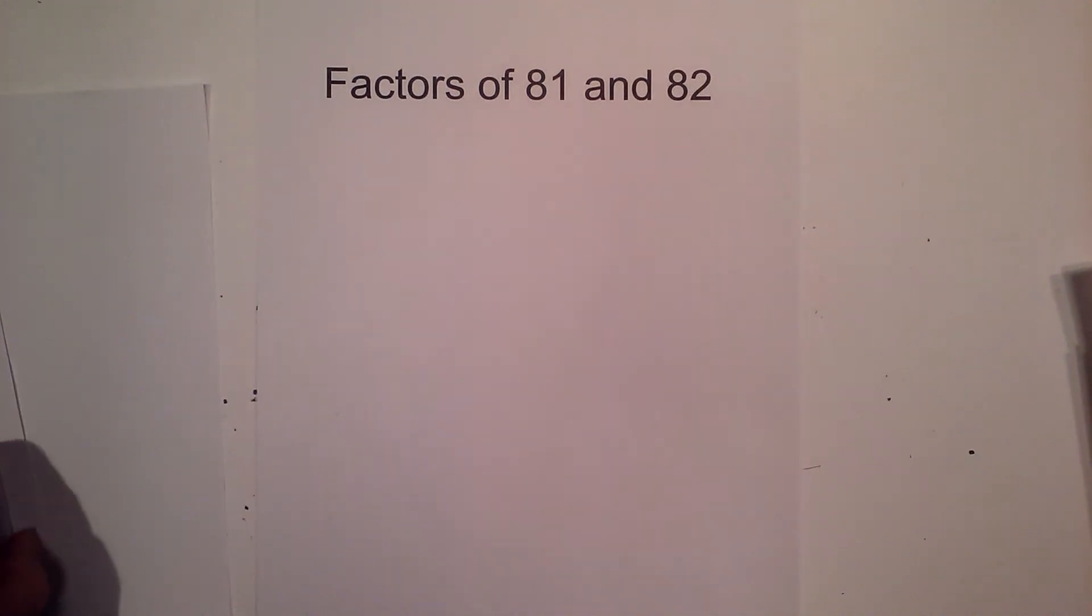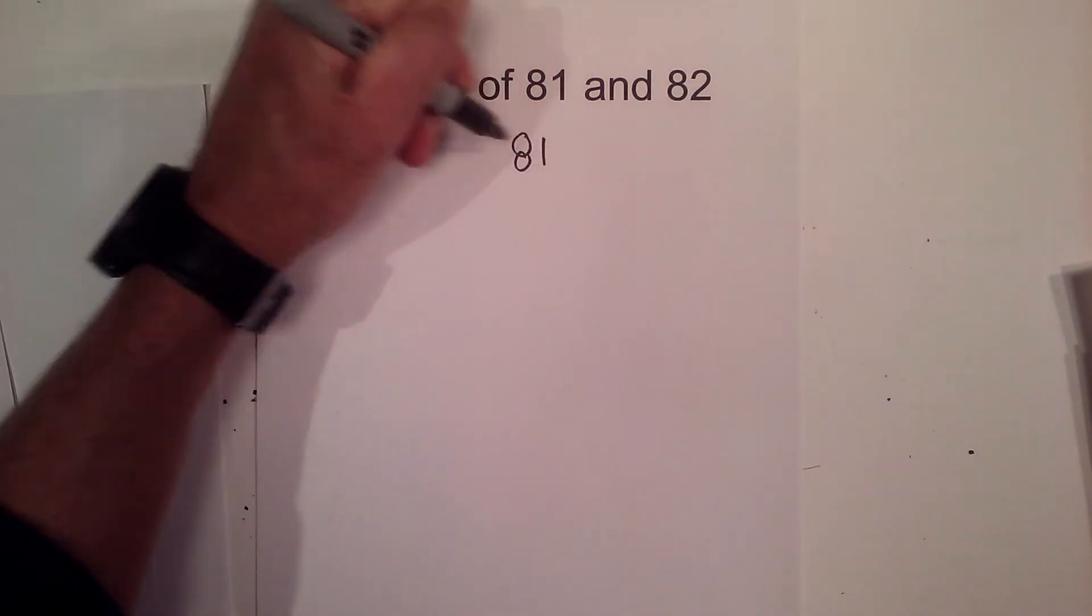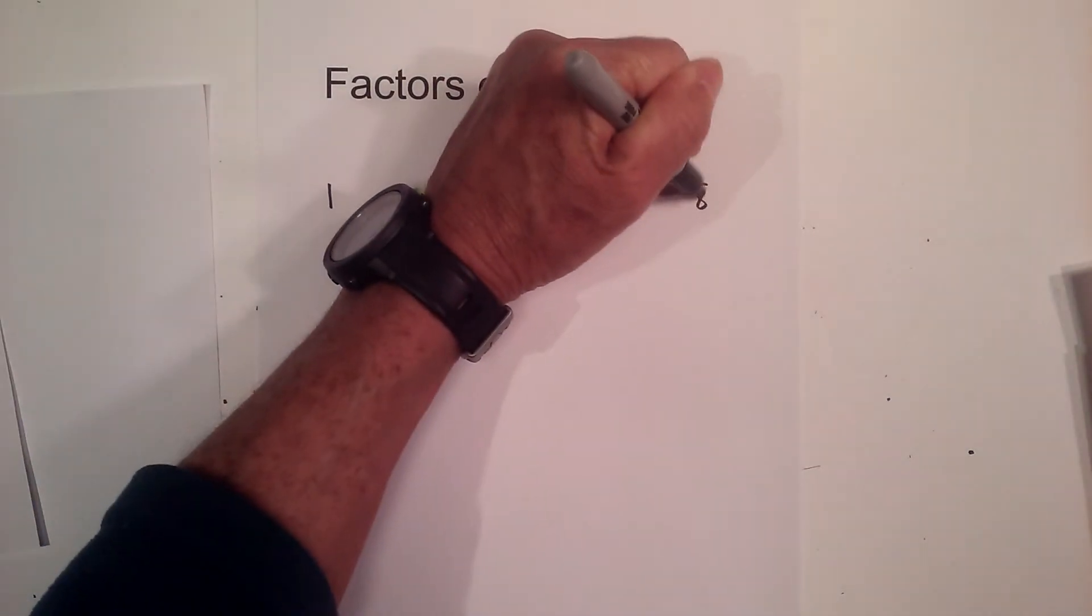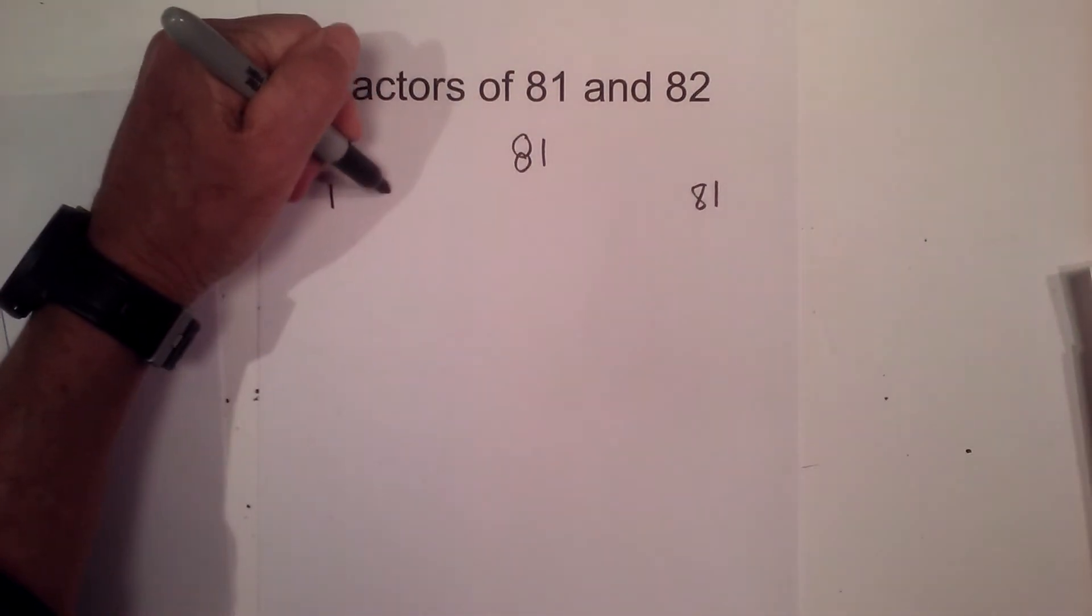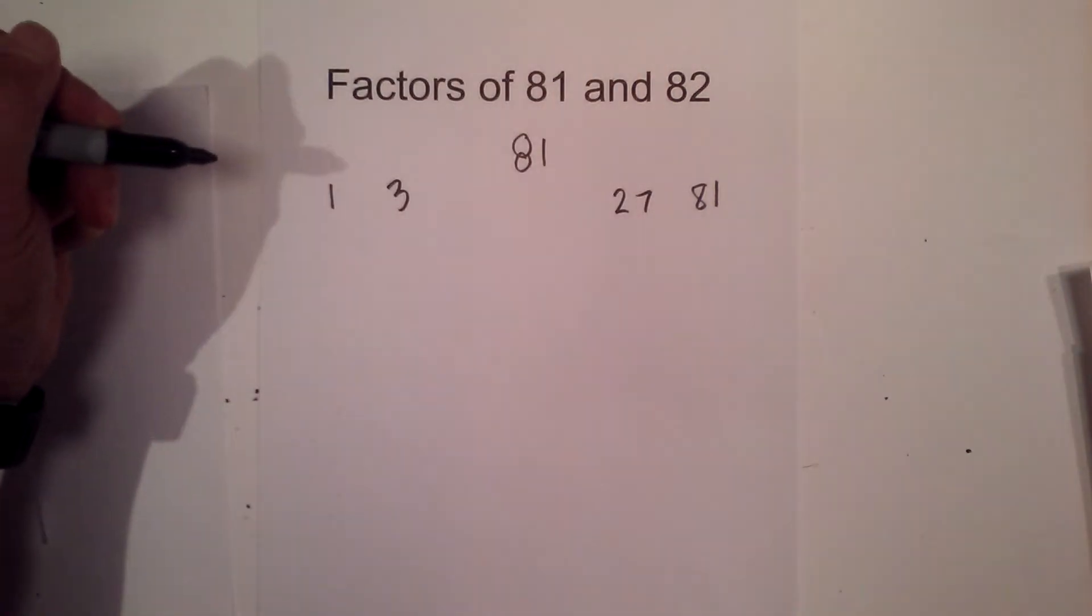Let's find the factors and the prime factorization of 81 and 82. Starting with 81, let's start with 1 times 81 equals 81, then we can multiply 3 times 27.